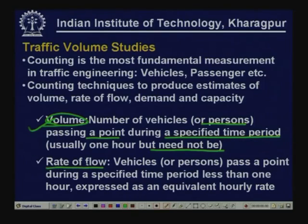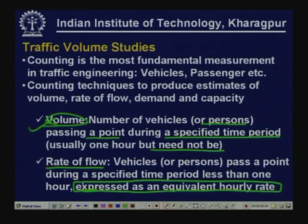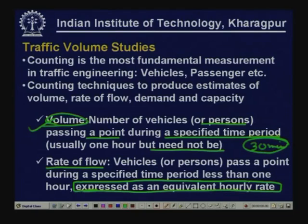Rate of flow is vehicles or persons passing a point during a specified time period less than one hour, expressed as an equivalent hourly rate. For example, if I carry out a study for thirty minutes, the volume for thirty minutes expressed as an equivalent hourly volume — if there are x vehicles in thirty minutes, then the rate of flow is 2x vehicles per hour. One is the actual number during the specified time; the other is that number expressed as an equivalent hourly rate.